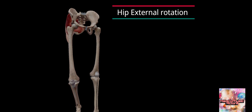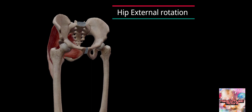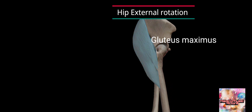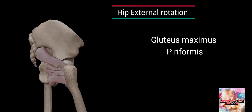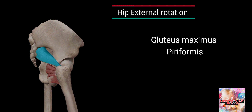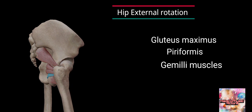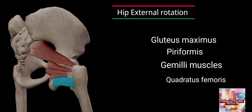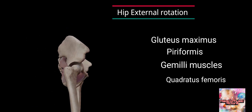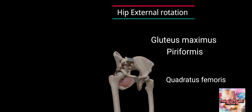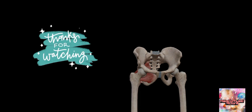Hip external rotation. The muscles acting are gluteus maximus, piriformis, gemelli muscles, quadratus femoris, and obturator muscles. Thank you.